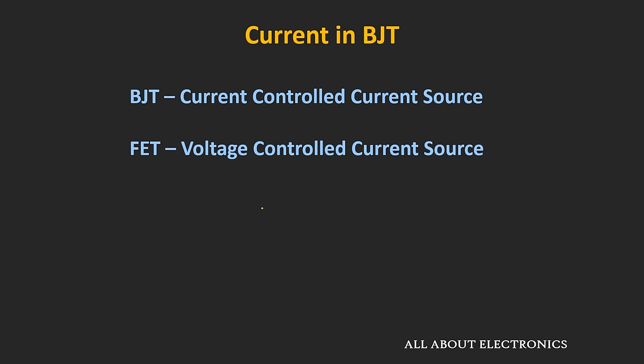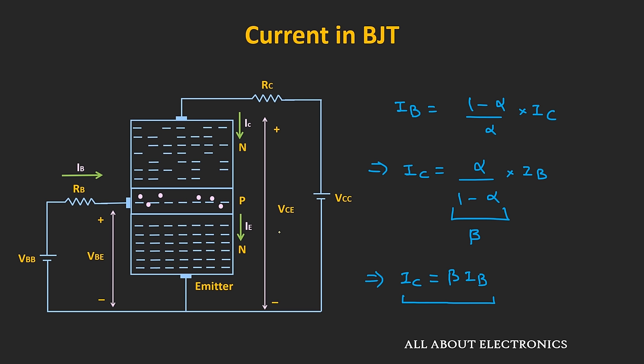On the other hand, the field-effect transistor is a voltage-controlled device, meaning by controlling the input voltage it is possible to control the output current. Also, in this BJT configuration, the output collector current gets amplified by the factor β. If we connect a resistor between the collector and the emitter terminal, it is possible to amplify the input signal. After biasing the BJT in this configuration, if we apply an AC signal as input, then it is possible to amplify that signal.